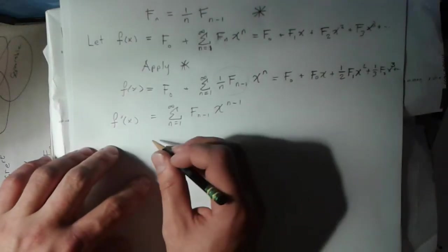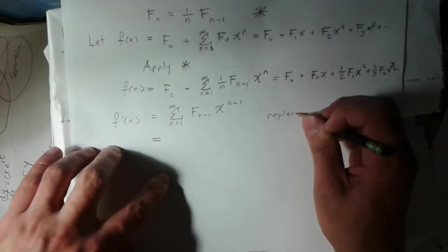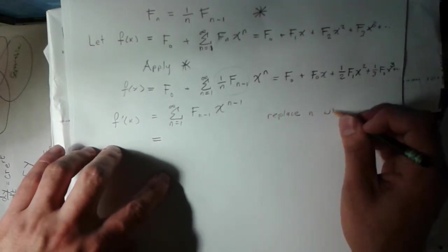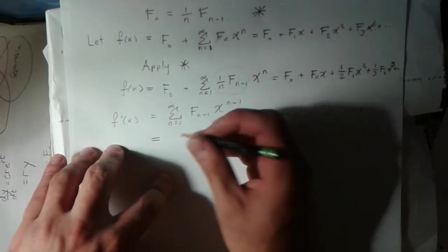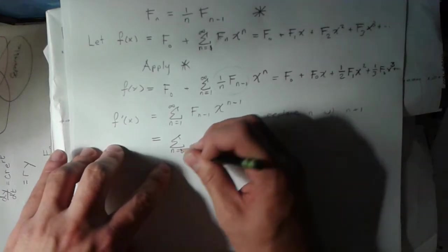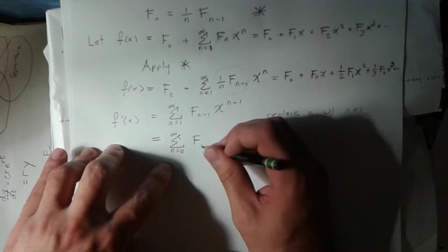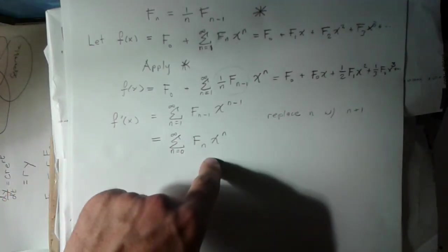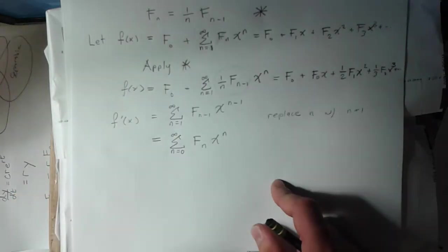If I do a little simplification here, if I replace n with n plus 1, then this is just going to look like the sum from 0 to infinity of f sub n x to the n, which is exactly the same as this original definition here.